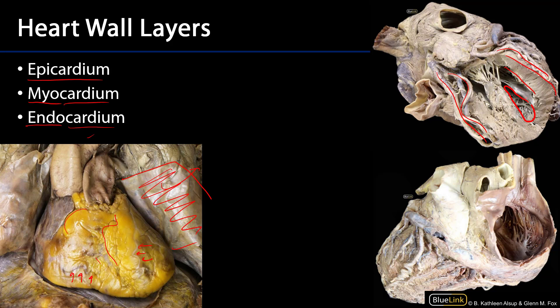These are trabeculae carneae — meaty beams found within the ventricles. Here we can also see a papillary muscle, this anterior papillary muscle, which is an extension of the myocardium but still covered by endocardium. And in this atrium here, we can see pectinate muscles — again, that's myocardium, but it's still covered by endocardium.